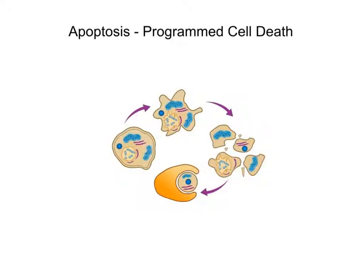Hello everyone. In this video I want to talk you through the process of apoptosis. Sometimes it's said 'apoptosis' even though it's a silent P, but it ultimately means the same thing. It's the scientific term for programmed cell death. And the key word here is 'programmed', because that implies this is an almost inherent or in-built mechanism that the cell has — and that is indeed the case.